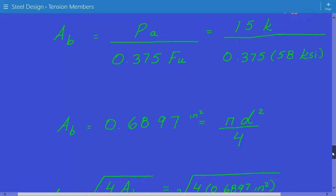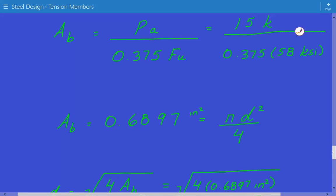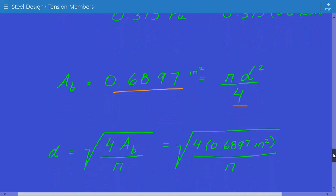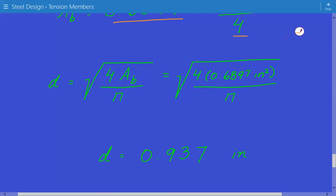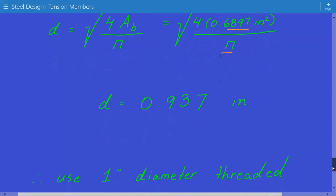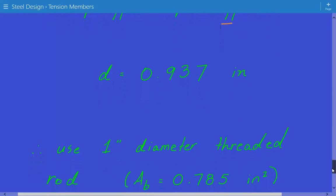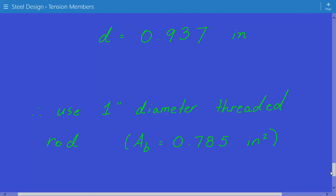The required cross-sectional area of this threaded part is equal to 0.6897 inches squared, which equals pi d squared over 4. We rearrange the equation and solve for d, the diameter. The diameter is equal to 4 times the cross-sectional area, 0.6897 inches squared, divided by pi, and we take the square root. The required diameter is equal to 0.937 inches. So for design purposes, we're going to use a 1-inch diameter threaded rod, and the cross-sectional area is equal to 0.785 inches squared.